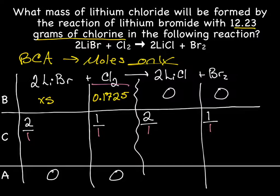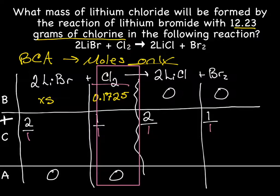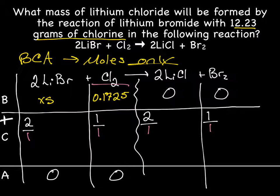Now we have our mole ratios. Next up, we need to calculate change. Remember that before plus change gives us after. And to calculate change, we need to pick a column that has two numbers in it. And that would be our known column here because we have the 0.1725 and we have a zero after. So we can use that information to calculate change. So what we need to say is that before plus change equals after. What we need is something that adds with 0.1725 to equal out to zero, and that would be negative 0.1725.